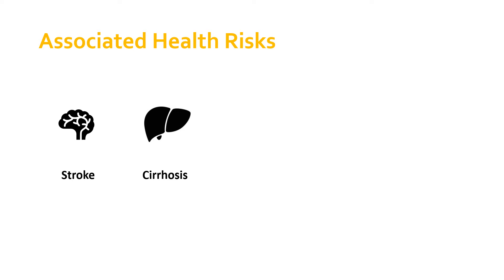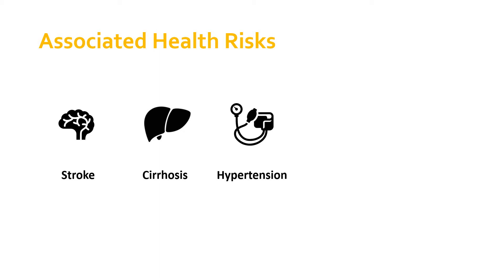We've also got hypertension — the idea that our blood pressure will increase over time. That's also linked to coronary heart disease. Having more than three drinks in a single sitting temporarily raises your blood pressure, and provided you don't do that too often, the body can cope. But if you repeatedly binge drink, that can lead to long-term sustained increases in blood pressure, which we would refer to as hypertension.